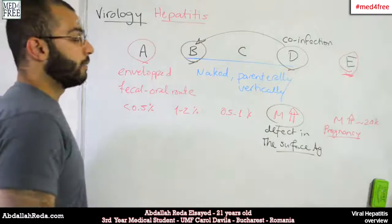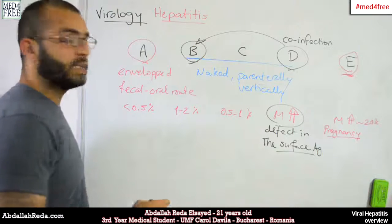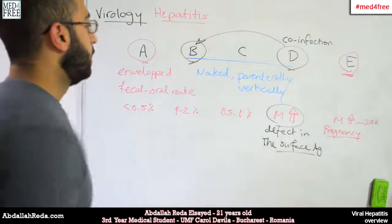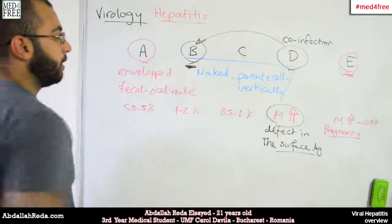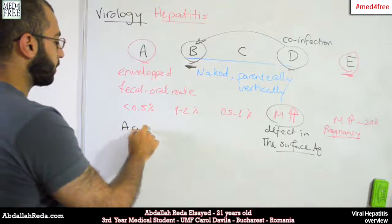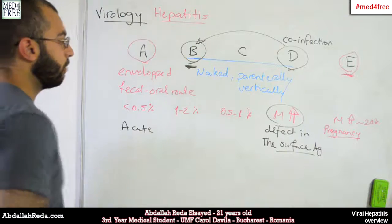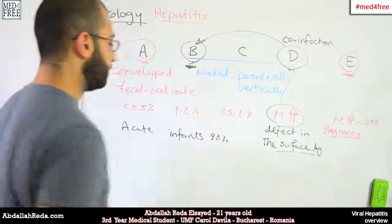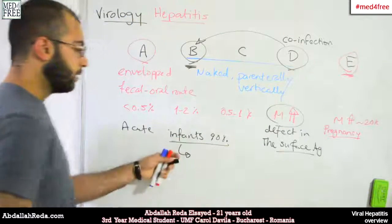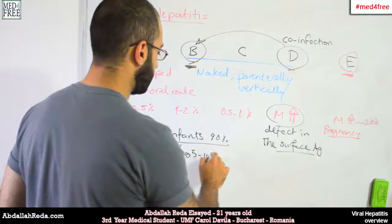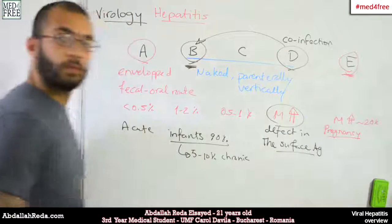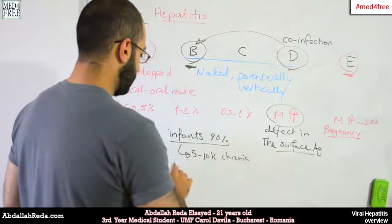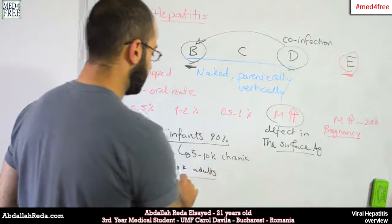Another thing to consider is the tendency to turn chronic. We have acute and chronic viral infections for hepatitis. Hepatitis A is acute. For hepatitis B, most cases — around 90% — are found in infants, and from those cases, about 5–10% turn chronic. The other 10% of cases are found in adults, and hepatitis B in adults is not that big of a deal.